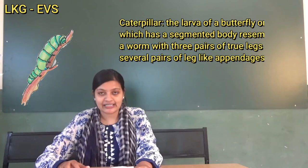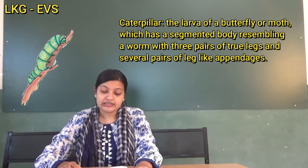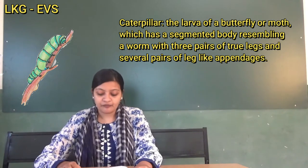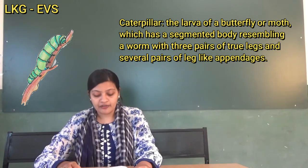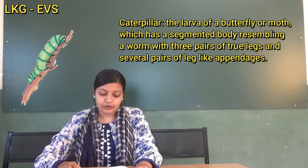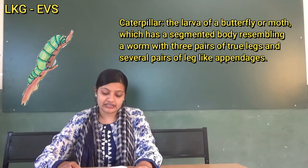Next, we will go with caterpillar. C-A-T-E-R-P-I-L-L-A-R. Caterpillar: the larva of a butterfly or moth, which has a segmented body resembling a worm with three pairs of true legs and several pairs of leg-like appendages.